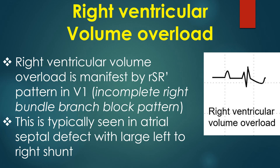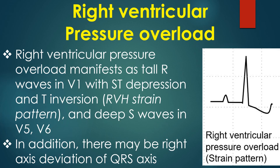Right ventricular volume overload is manifest by an RSR' pattern in V1, or incomplete right bundle branch block pattern, typically seen in atrial septal defect with large left-to-right shunt. Right ventricular pressure overload manifests as tall R waves in V1 with ST depression and T inversion, i.e., the RVH strain pattern, and deep S waves in V5 and V6.